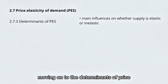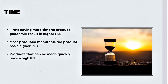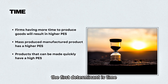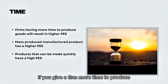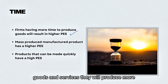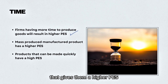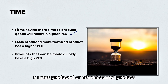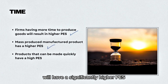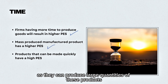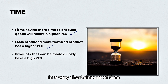Moving on to the determinants of price elasticity of supply. The first determinant is time. If you give a firm more time to produce goods and services, they will produce more, giving them a higher PES. A mass-produced or manufactured product will have a significantly higher PES, as they can produce large quantities in a very short amount of time — think toothpicks and A4 paper.